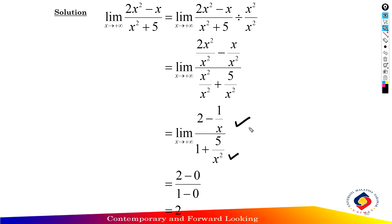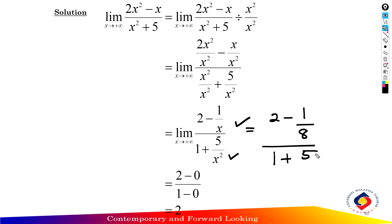Substitute infinity into the function. Numerator: 2 minus 1 over infinity. Denominator: 1 plus 5 over infinity squared. So numerator 2 minus 0 equals 2, denominator 1 minus 0 equals 1. Therefore the limit as x approaches positive infinity of f(x) equals 2.